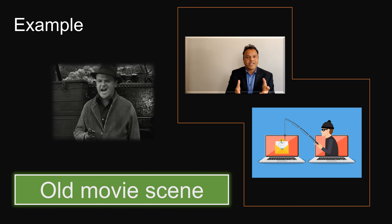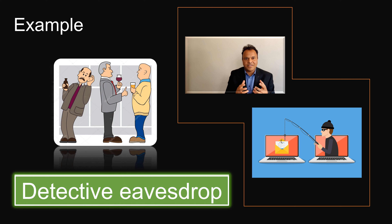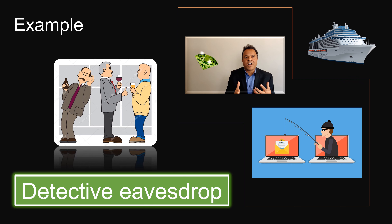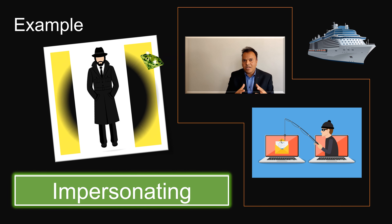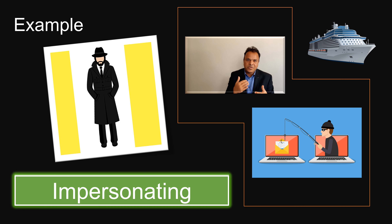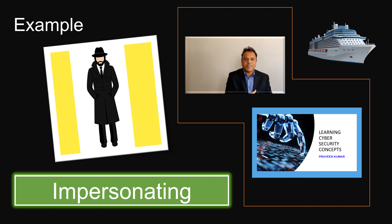Imagine a scene from an old movie where a detective overhears a smugglers' gang talking about picking up diamonds at the docks. The smugglers say to wear a black coat, black hat, white handkerchief, and carry a briefcase. The detective intercepts this, dresses up as that person, impersonates them, goes to the dock, and tries to collect the diamonds. This is impersonation — or spoofing.